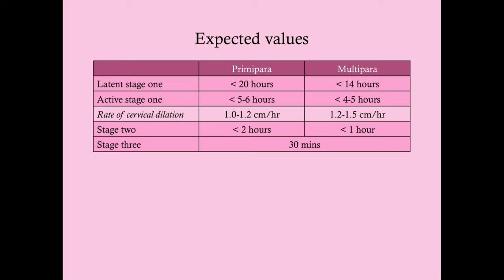Stage two: a primipara shouldn't be pushing for more than two hours; a multipara shouldn't push for more than one hour. If mom has received spinal anesthesia, add one hour to each — so three hours for a primipara and two hours for a multipara — since she can't feel contractions as well and may not push as hard. Stage three: delivery of the placenta should occur within no more than 30 minutes for all women.